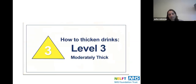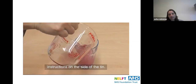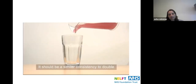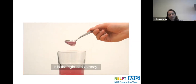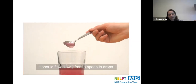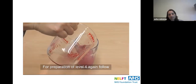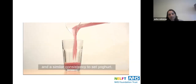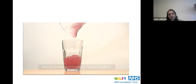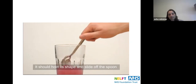To thicken to level three — moderately thick: follow the instructions on the side of the tin. It should be similar to double cream and be difficult to suck through a straw; it should flow slowly from a spoon in drops. For level four — extremely thick: again follow the tin instructions. It should be too thick to drink from a cup, similar to set yogurt, holding its shape and sliding off the spoon.